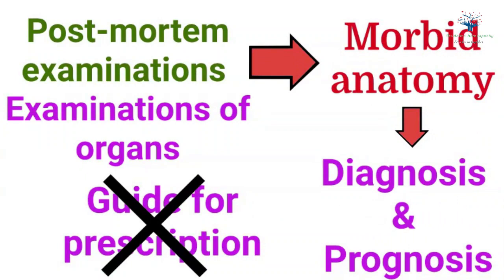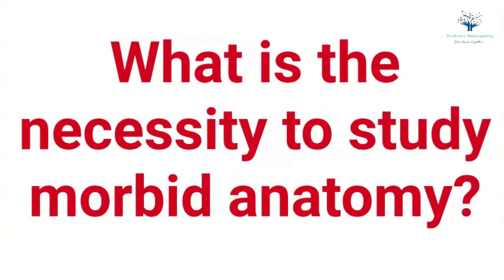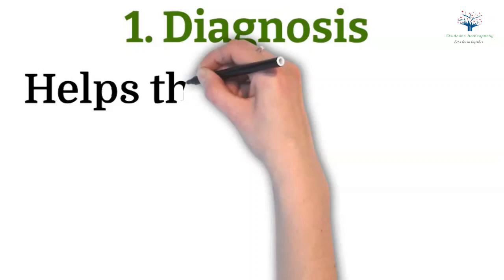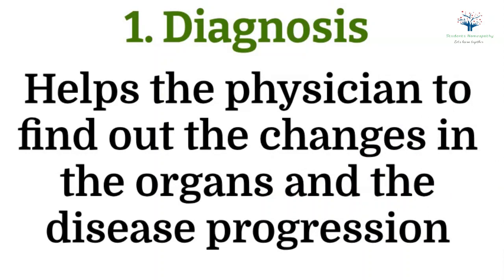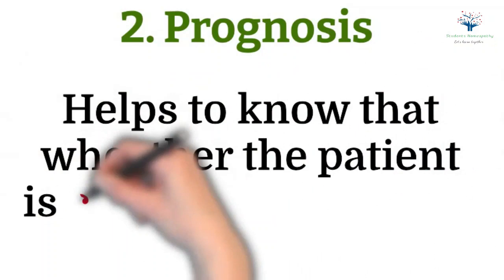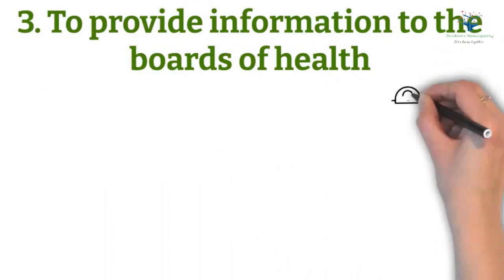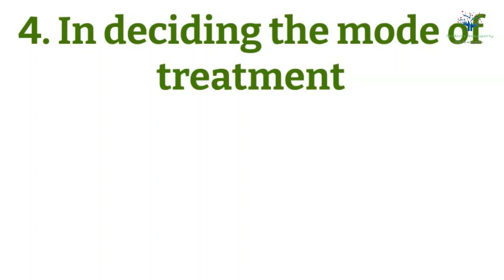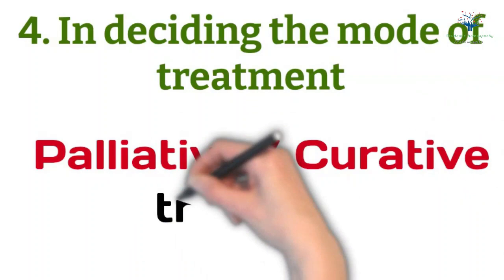Now let's discuss what is the necessity to study morbid anatomy. Number 1: Diagnosis — it helps the physician to find out the changes in the organs and the disease progression. Next, Prognosis — it helps to know whether the patient is curable or incurable. Next, to provide information to the boards of health. And lastly, in deciding the mode of treatment — it helps to choose whether palliative treatment should be given or the curative.